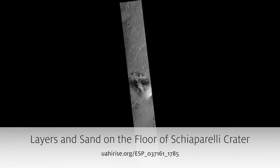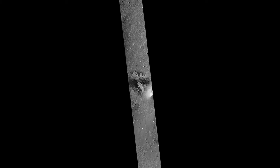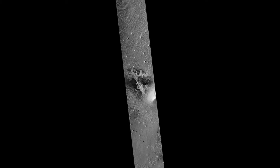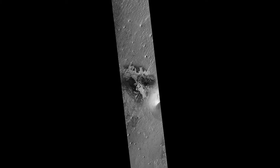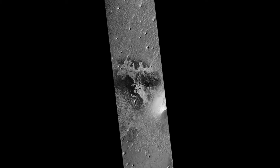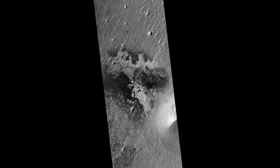Layers and Sand on the Floor of Schiaparelli Crater. Schiaparelli Crater is a 460-kilometer-wide multi-ring structure. However, it is a very shallow crater, apparently filled by younger materials such as lava and/or fluvial and aeolian sediments.